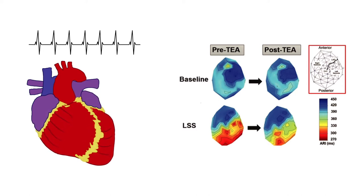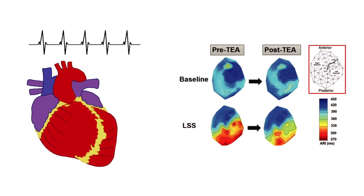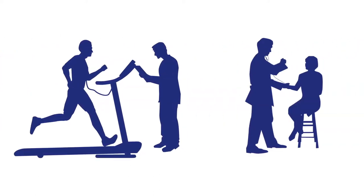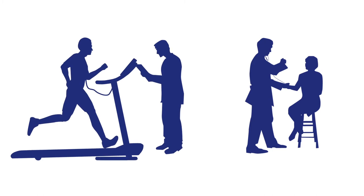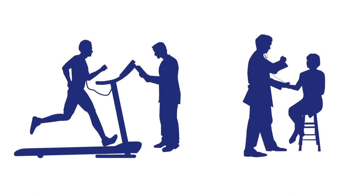They found that this technique successfully suppresses the electrical signals sent by the autonomic nervous system and improves electrical wave stability in the heart. Importantly, the study suggests that this effect only occurs during overexcitation, not during normal resting conditions.